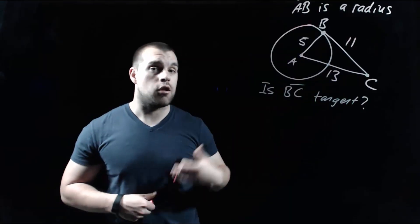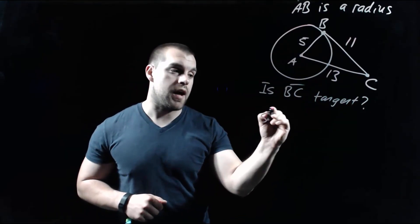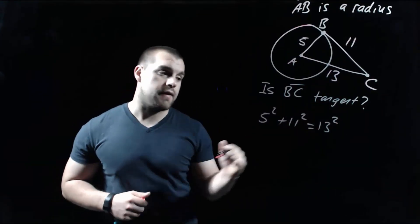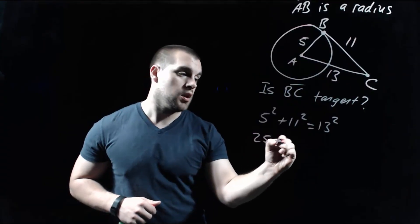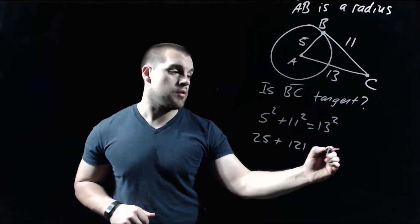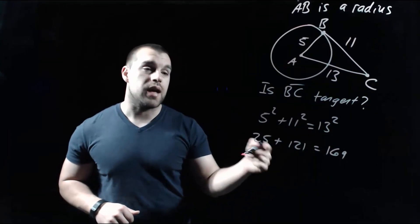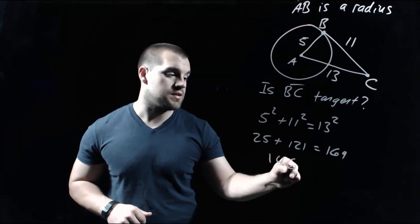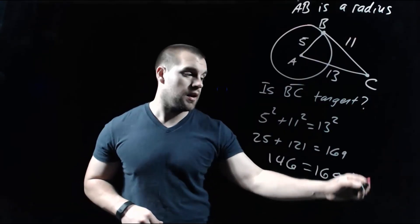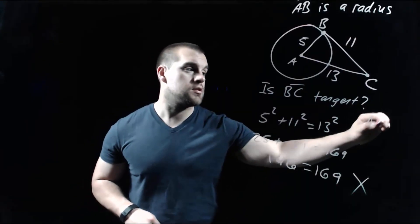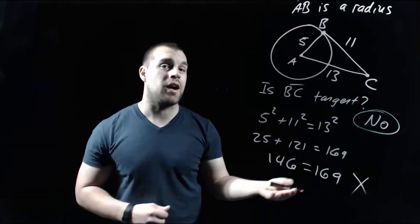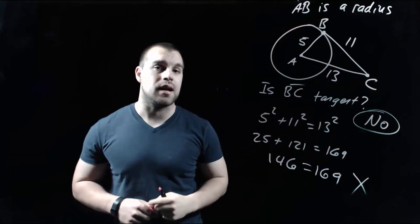The 13 is the longest side, so that's our c value: 5² + 11² = 13². On the left-hand side: 5² is 25, 11² is 121. On the right-hand side: 13² is 169. Adding the left side gives 146 = 169 — this is not true. The left side does not equal the right side, so BC is not tangent. The Pythagorean theorem didn't work, so BC cannot be a tangent.